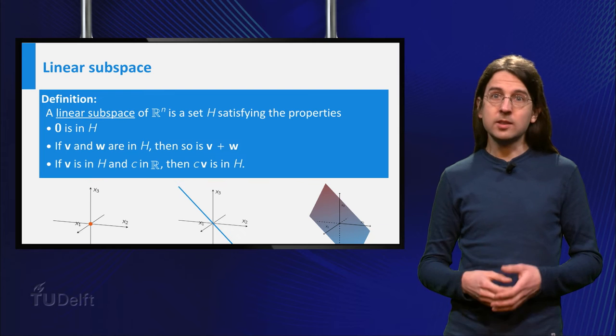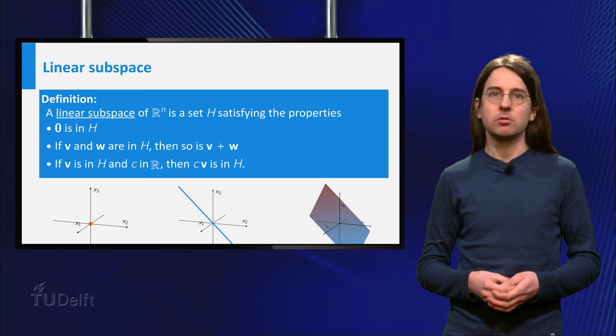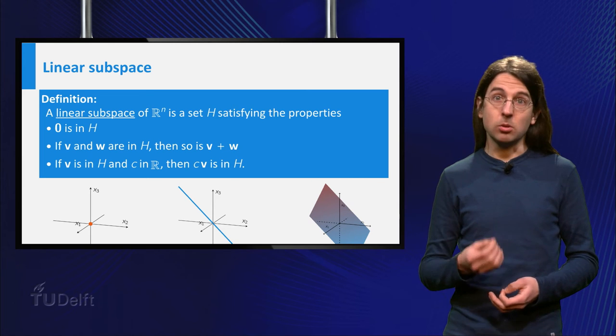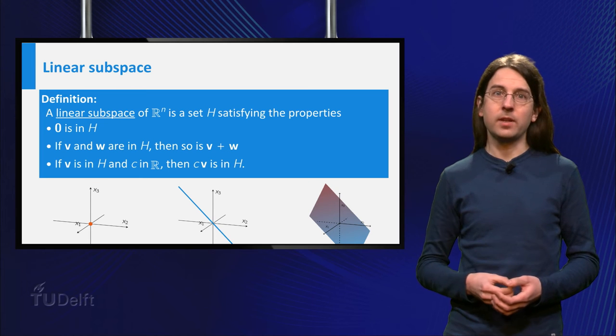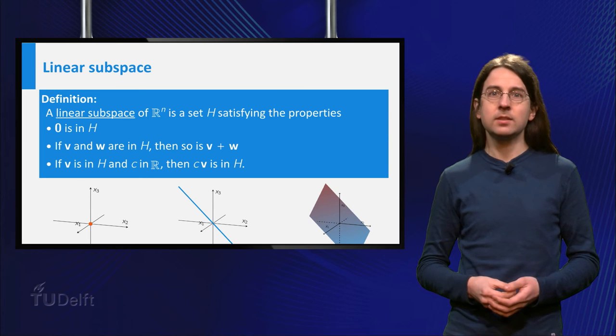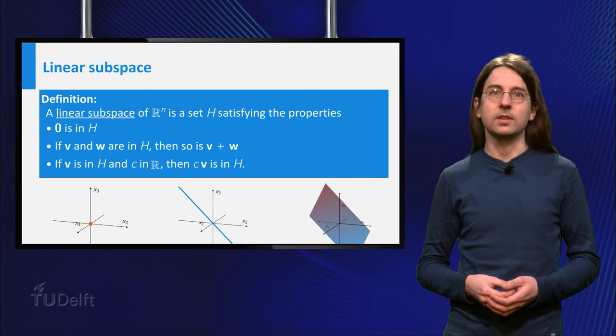A linear subspace of Rn is a set which satisfies the superposition principle. So it contains the origin, the trivial solution, sums of vectors in this set give a new vector in this set, and multiples of vectors are also contained in this set.